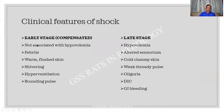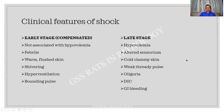The clinical features: in the early stages not associated with hypovolemia — the patient is febrile, there is warmth, flushed skin, some amount of shivering, hyperventilation as the body tries to compensate, and a bounding pulse with increased cardiac output. In the late stage — the classical symptoms of shock — hypovolemia, altered sensorium, cold and clammy skin, weak thready pulse, oliguria, DIC, and GI bleeding. This is what was mentioned in the case history. In septicemic shock, the patient will not have cold clammy skin; instead there will be warmth and confusion due to septicemia. Please differentiate between the two conditions.